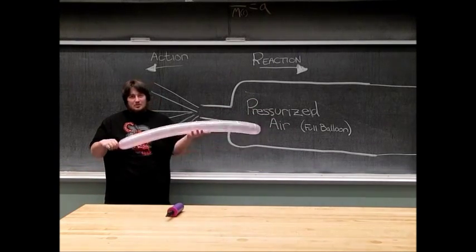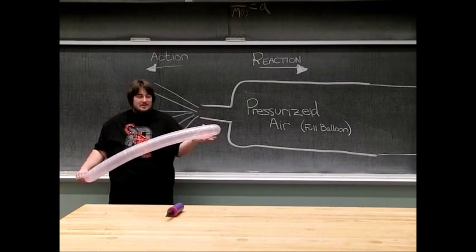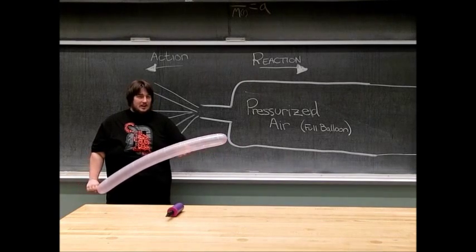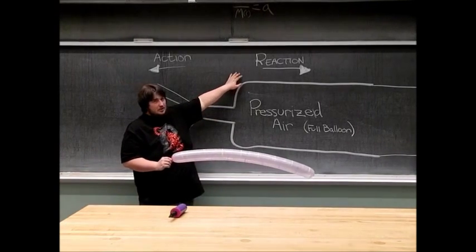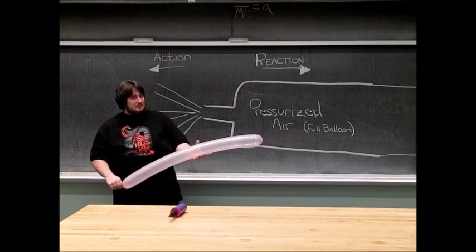Now, the reason why this is a special rocket balloon is on the end of our balloon there's a little bit of extra mass, and what this extra mass allows for is for this reaction to be against something, and to be actually pushing something forward.